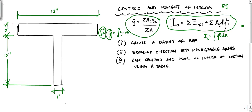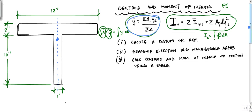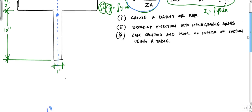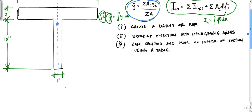Obviously we know that the centroid of the y-axis lies along this line because of the symmetry, and the centroid — Y-bar — is somewhere around here that we need to locate. In order to do that, we're going to apply the basic equation for the first moment of area or the centroid. I want to create a table, so let me get my straight edge.